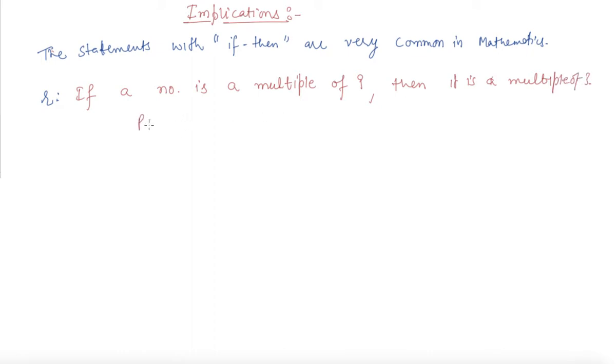Now I can say P: a number is a multiple of nine. Q is a number is a multiple of three.